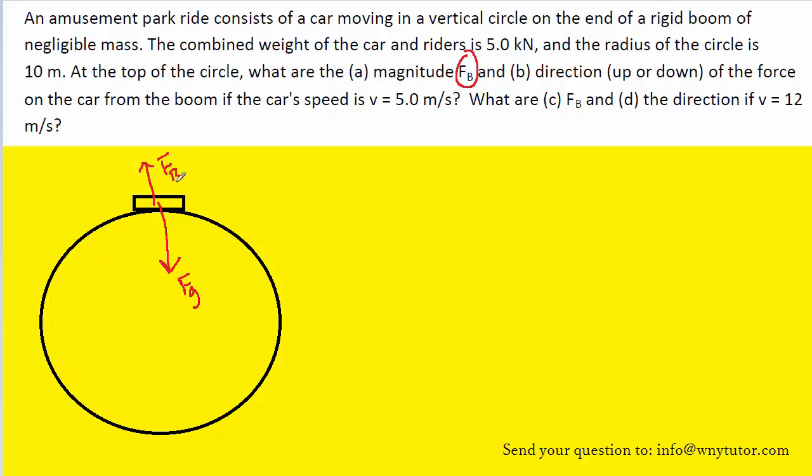And we will see from our calculations whether that direction is correct. It is possible that if we calculate a negative value for Fb, that we would in fact have to turn it around and point it downward. For now we'll arbitrarily point it upward and see what the math tells us, so to speak.